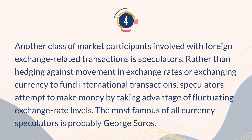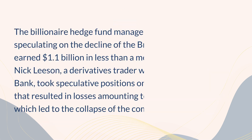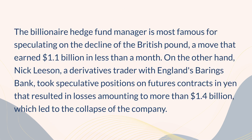The most famous of all currency speculators is probably George Soros. The billionaire hedge fund manager is most famous for speculating on the decline of the British pound, a move that earned 1.1 billion United States dollars in less than a month. On the other hand, Nick Leeson, a derivatives trader with England's Barings Bank, took speculative positions on futures contracts in yen that resulted in losses amounting to more than 1.4 billion United States dollars, which led to the collapse of the company.